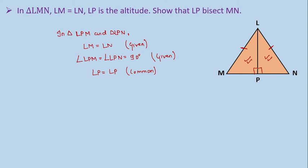Now, see we have a right angle triangle and its hypotenuses are equal and one side of the triangle, that is LP, is equals to LP. So, we can say that triangle LPM is congruent to triangle LPN by RHS congruence.